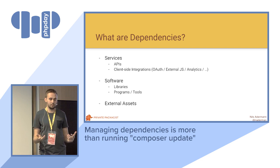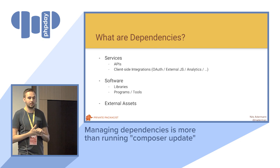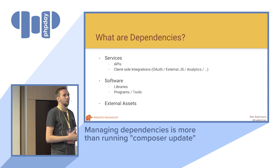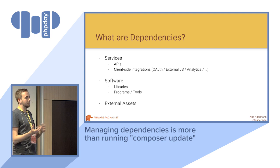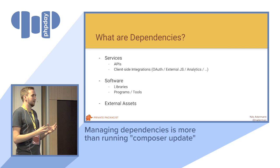With services I mean things like APIs that you're using, maybe some kind of client-side integration with an external service, something like OAuth or some kind of external JavaScript tool that you're embedding as part of the site. And with software — the code stuff — I really mean libraries that you're using, but also programs and tools like Composer itself or PHPUnit, different software that you're using as part of your development process or to actually run your project, and you can include external assets here too.